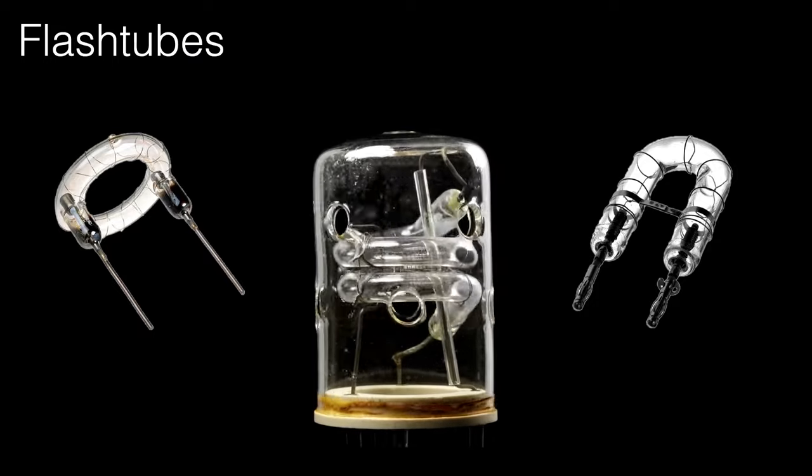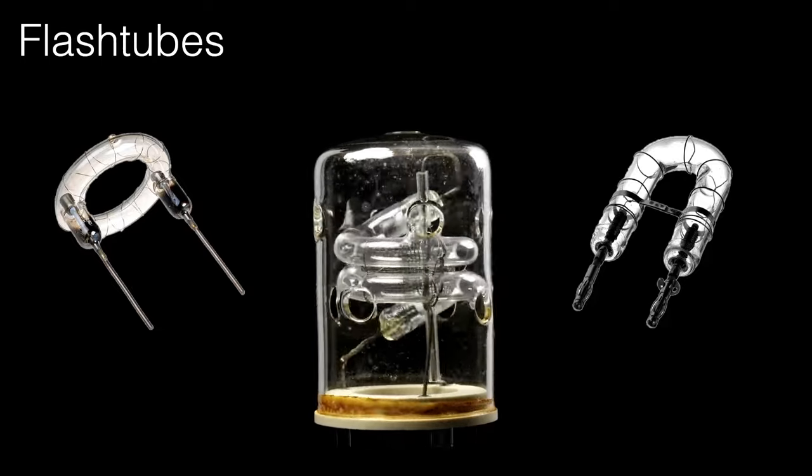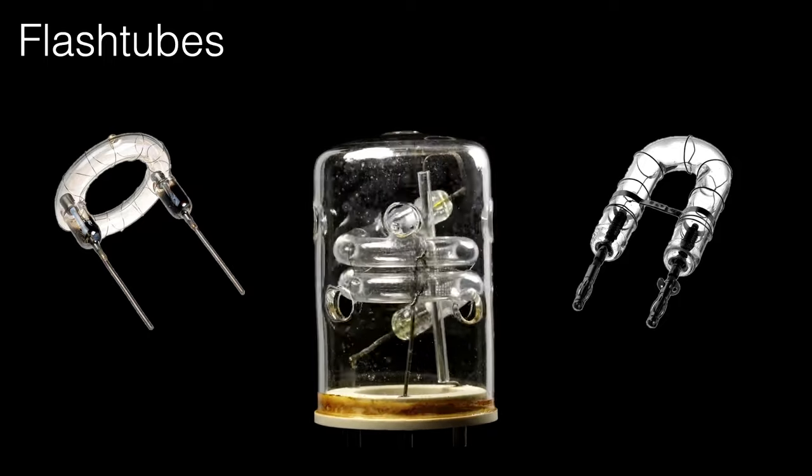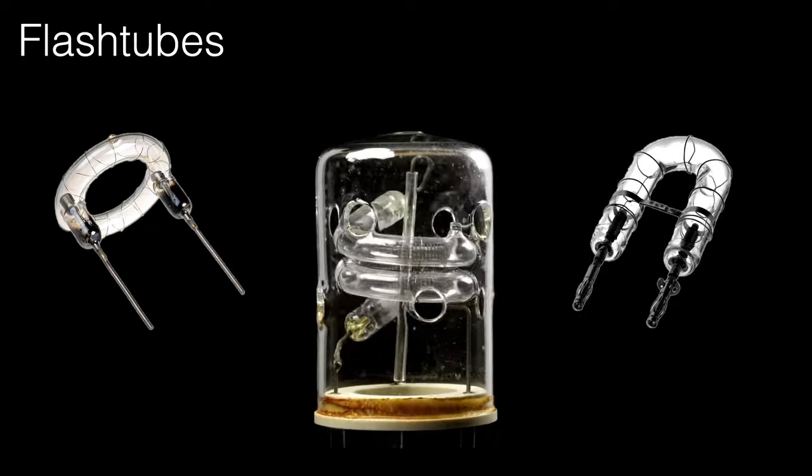The flash from these tubes can be very short. A typical camera flash will be around a thousandth of a second or shorter. But with careful design of the electronics, the flash can be as short as one-tenth of one-millionth of a second.